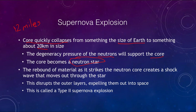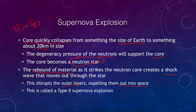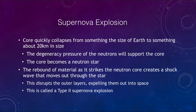A neutron star will form when the degeneracy pressure of the neutrons is supporting it. As material falls into that newly formed neutron star, it will bounce and rebound off, creating a shock wave that moves out through the star, disrupting the outer layers and expelling them out into space. The exact method of this is not completely understood and is something astronomers still strive to understand. This is what we call a type 2 supernova — there is also a type 1 that we will look at, which is very important for determining distances, but a type 2 is what happens at the end of a very massive star.